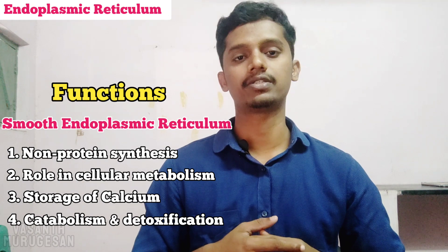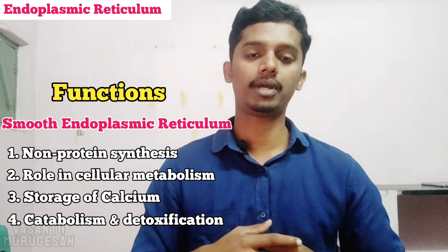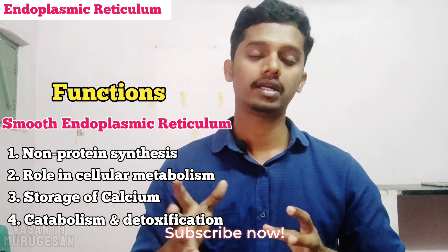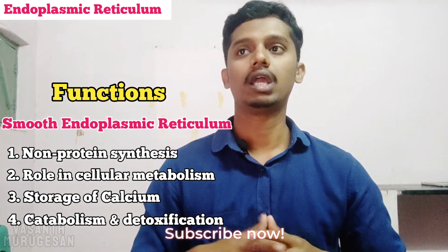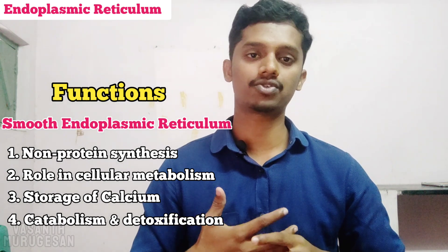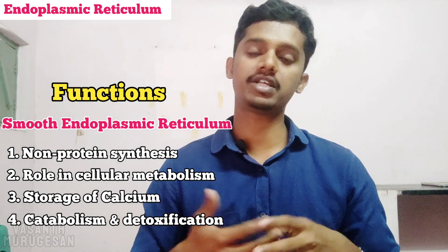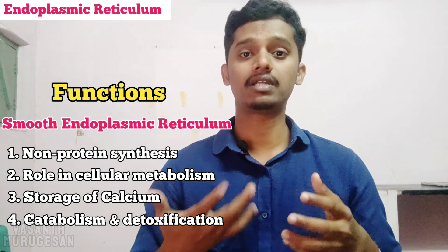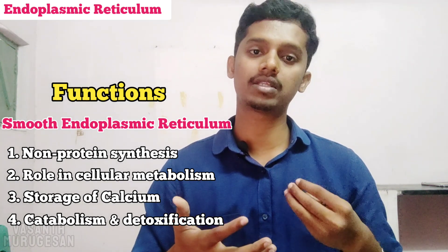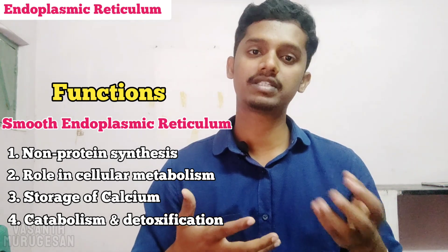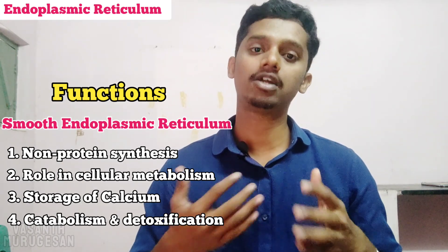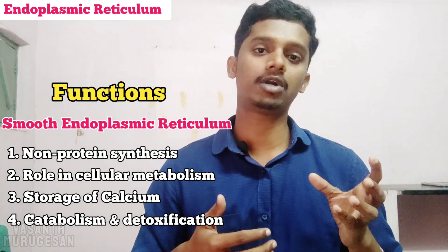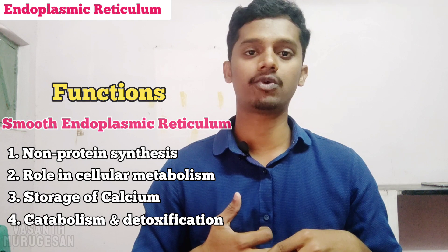The fourth function is catabolism and detoxification. In Smooth Endoplasmic Reticulum, some toxic substances are catabolized and detoxified. For example, carcinogens — such as those found in fast food or junk foods — when consumed, the Smooth ER helps to prevent and neutralize those carcinogens. This is an important process.